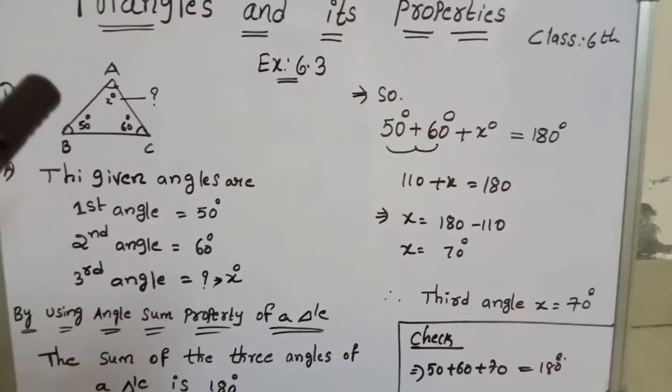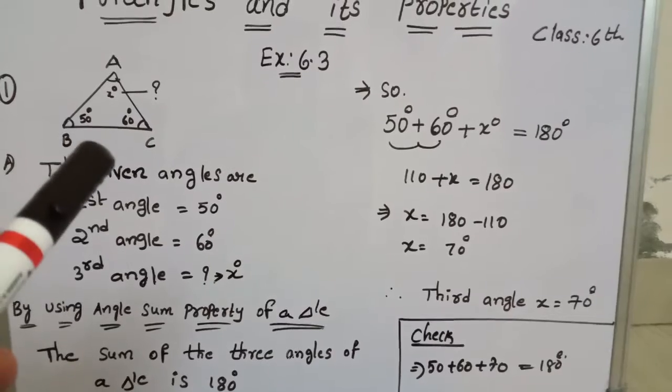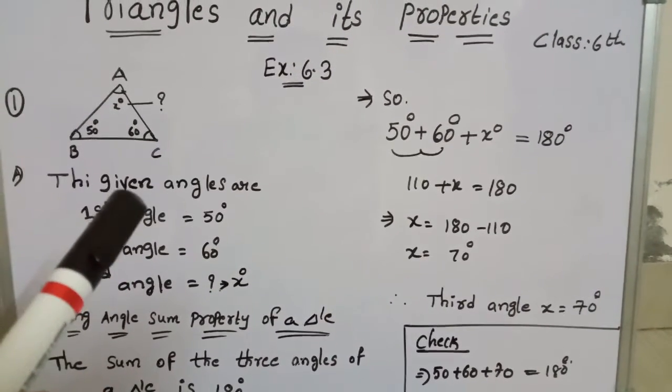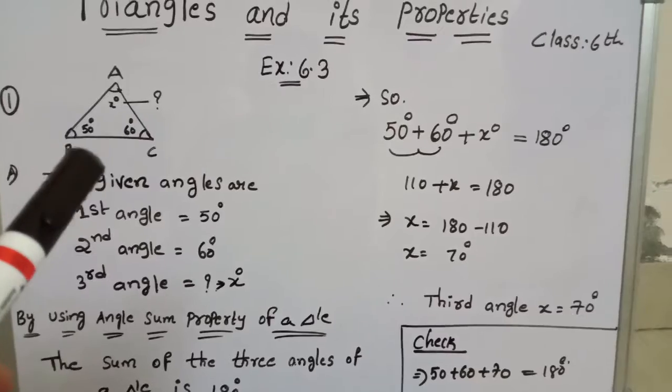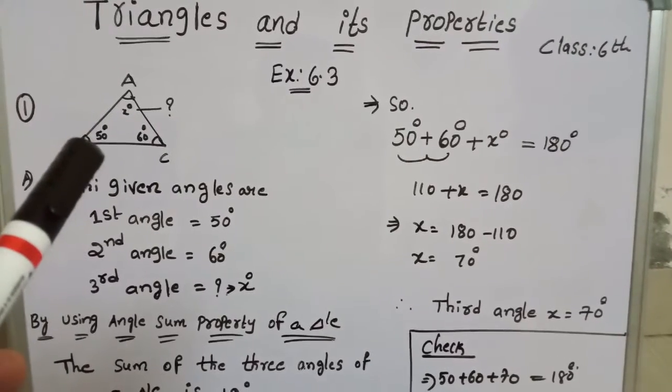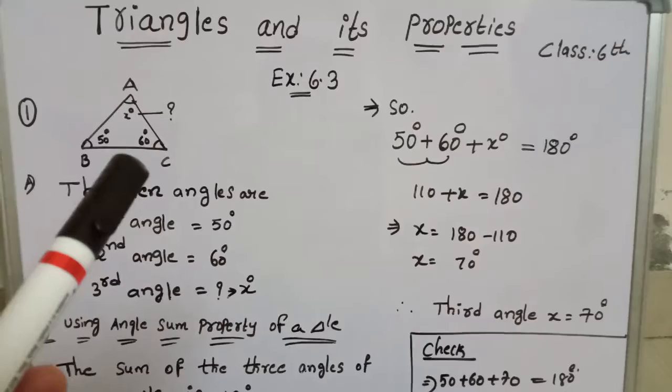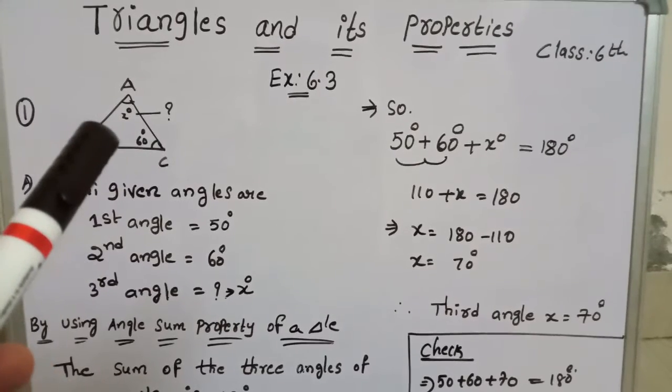If you add X degrees plus 50 degrees plus 60 degrees the result should be 180 degrees. Let's see, the given angles are: first angle is 50 degrees, second angle is 60 degrees, third angle is X degrees.